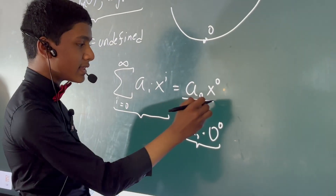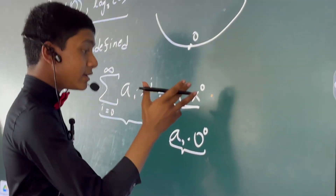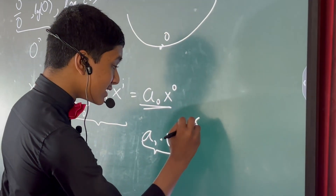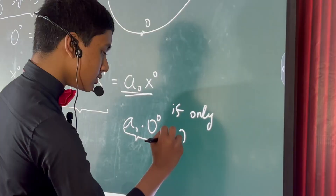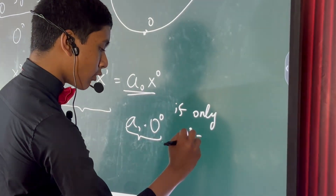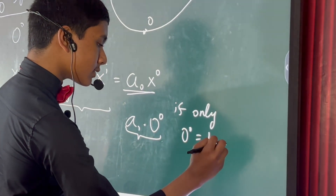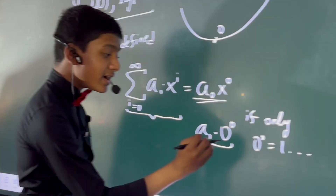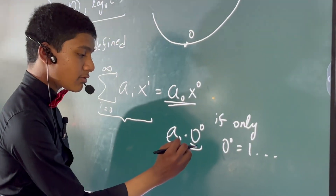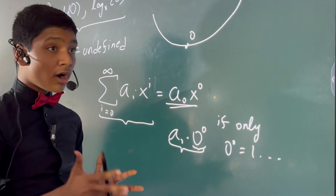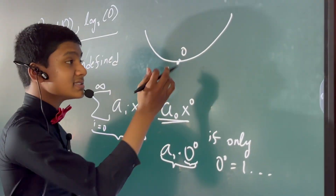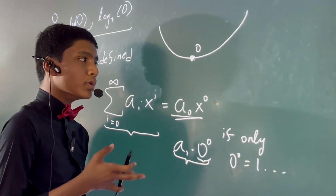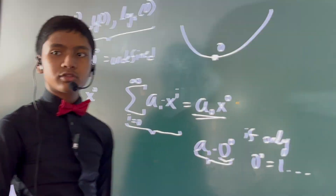Now that is undefined. But the problem is, in every case where this crops up, this would be correct if only zero to the zero was equal to one. So essentially, we just define zero to the zero as equal to one in this specific context, because it allows every power series to be continuous at zero when they wouldn't be otherwise.